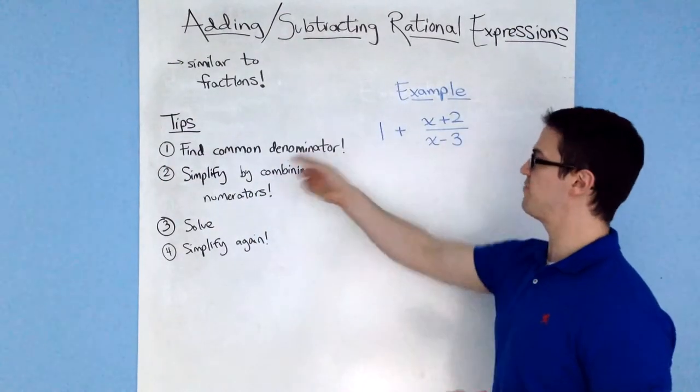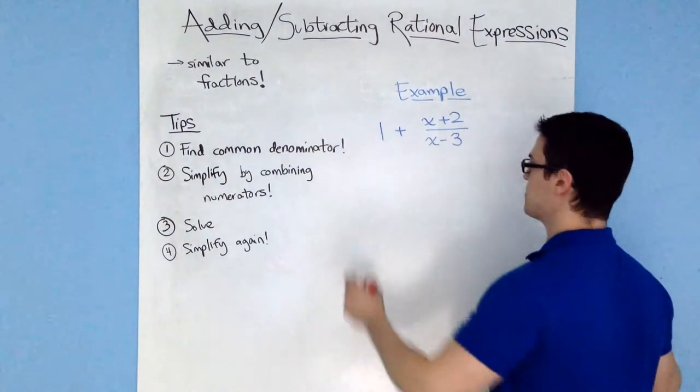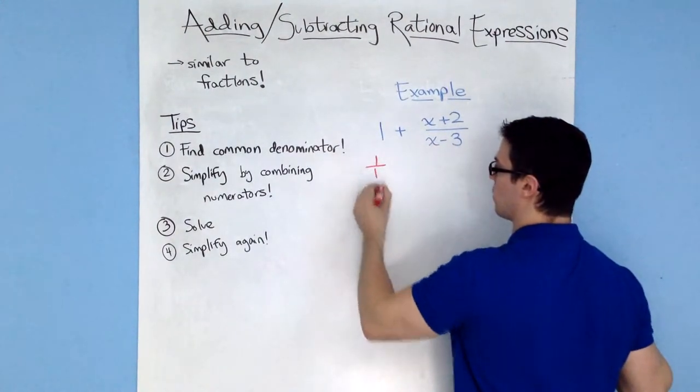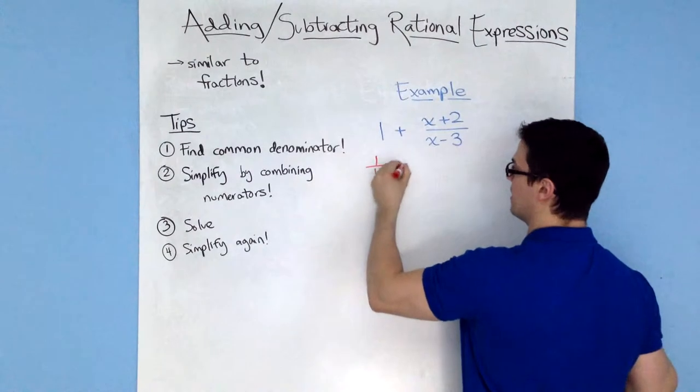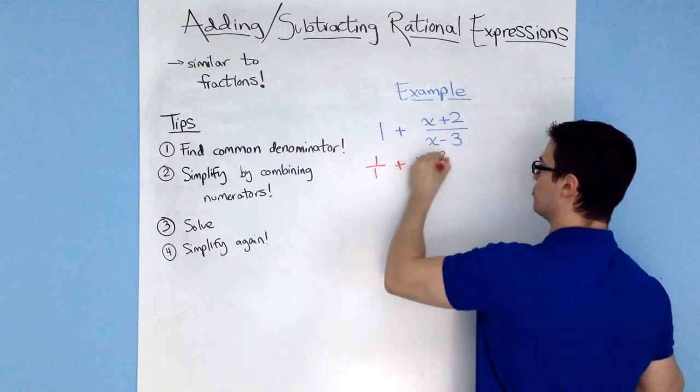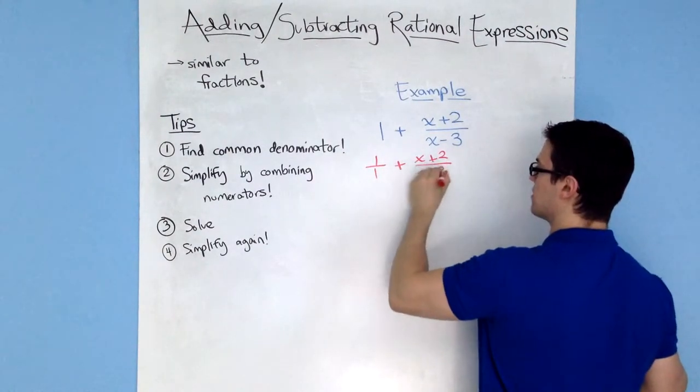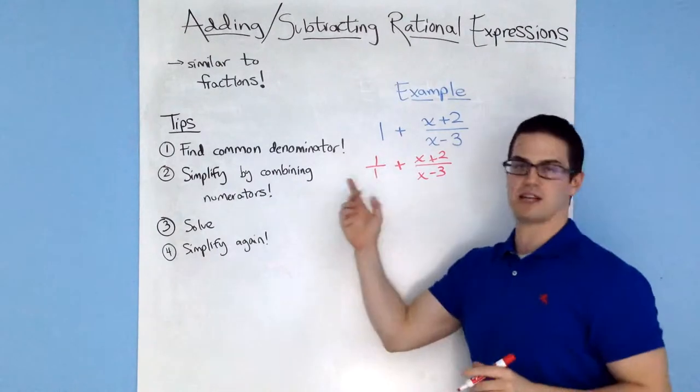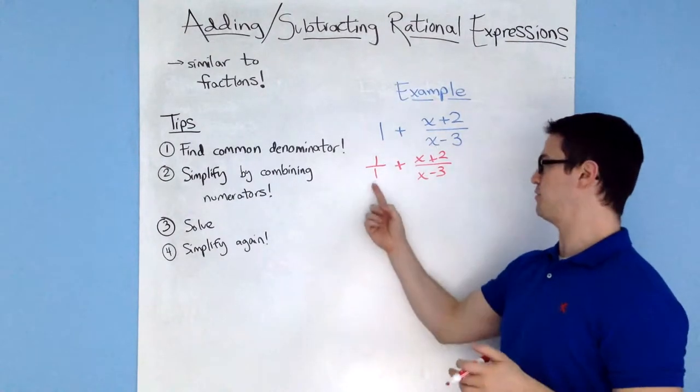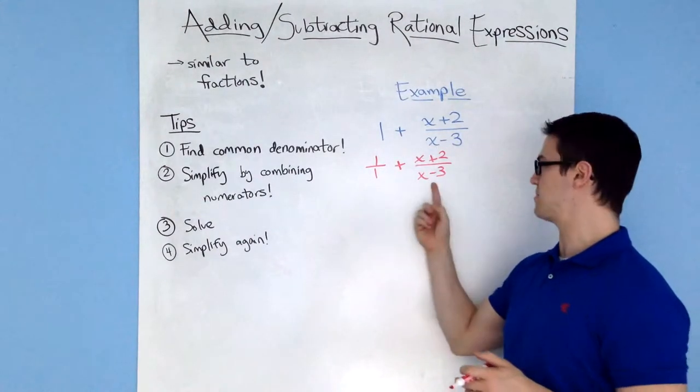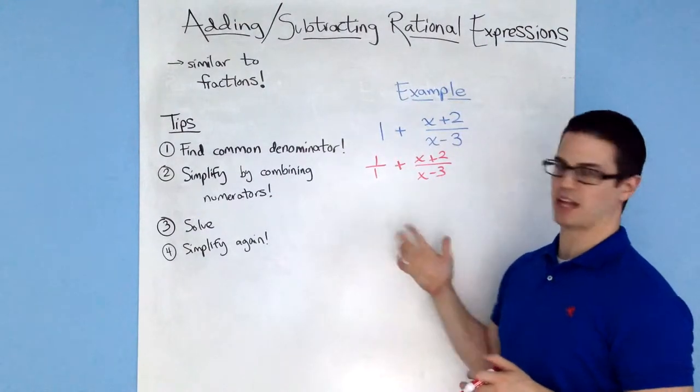The first thing we're going to do is find the common denominator. For this first one, the denominator is 1 because it's 1 over 1. And then we have x plus 2 over x minus 3. Now the easiest common denominator to find would just be to multiply this denominator by this denominator right here, and then you get x minus 3.